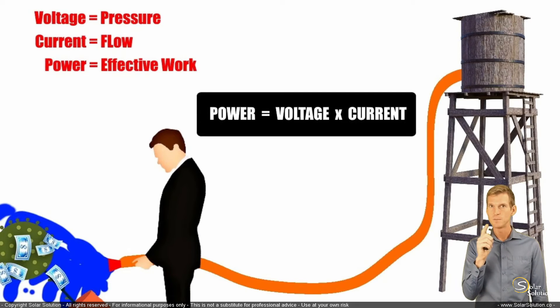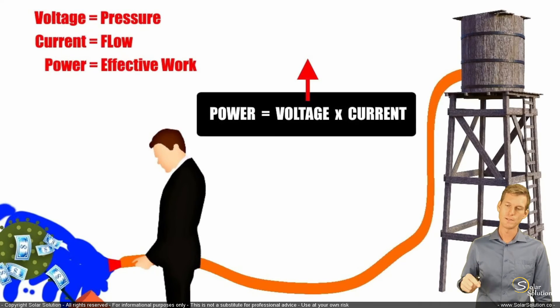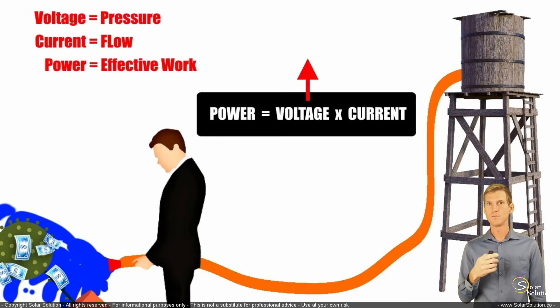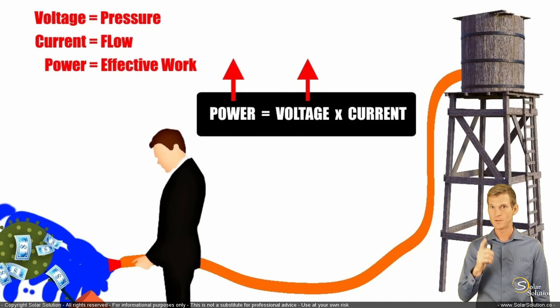But at least you understand the relationship between the three of them. So you also understand that if you would increase the voltage, if you would increase the electrical pressure, if you would increase the height, the elevation of your water tank, then your effective work, so your power goes up. You increase only the voltage, then your power will go up directly. You don't have to change the current yet. If you would increase the voltage, the electrical pressure, then your effective work, so your power goes up.